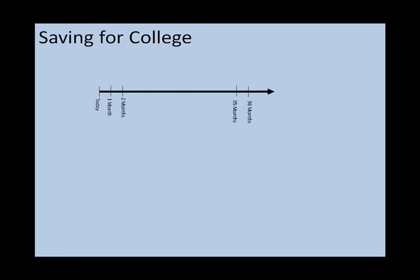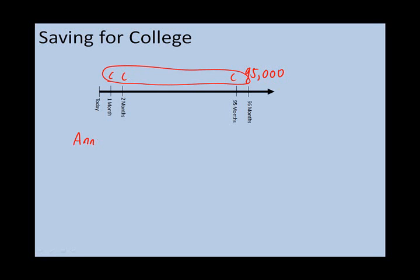What the question is really asking is: we have $95,000 in 96 months — what payment would we have to make each month to ensure that at 96 months we have $95,000 in our savings account? As soon as we see a regular payment being made, we think about the annuity formula. The annuity formula gives us the present value at time t equal to the payment at time t plus 1, divided by r, multiplied by 1 minus 1 over 1 plus r to the power of capital T. What we want to find is the value of C.